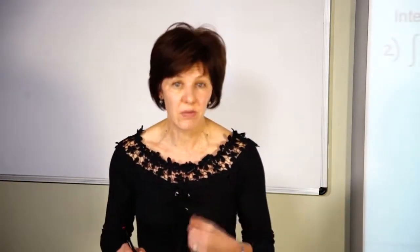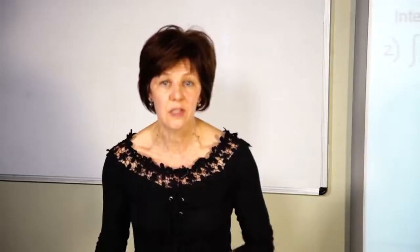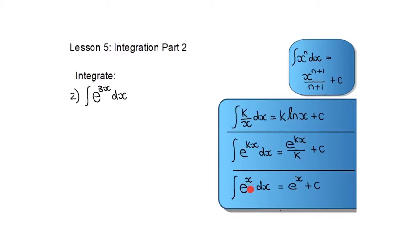Another rule you must be able to use is how to integrate e to the power kx and e to the power x. The integral of e to the power kx is e to the power kx divided by k, plus the constant. And e to the power x integrated gives the same thing — e to the power x again. For example, integrating e to the power 3x gives e to the power 3x divided by 3, plus the constant.